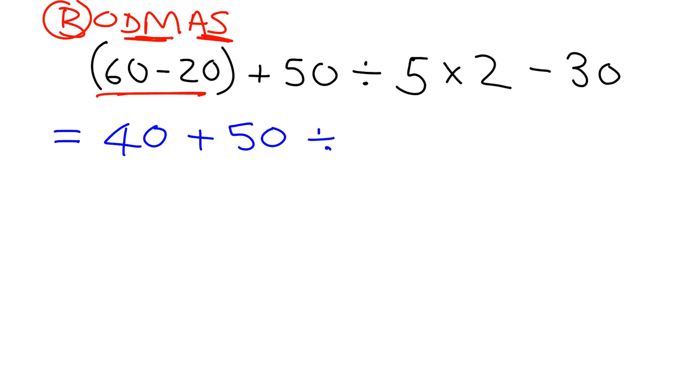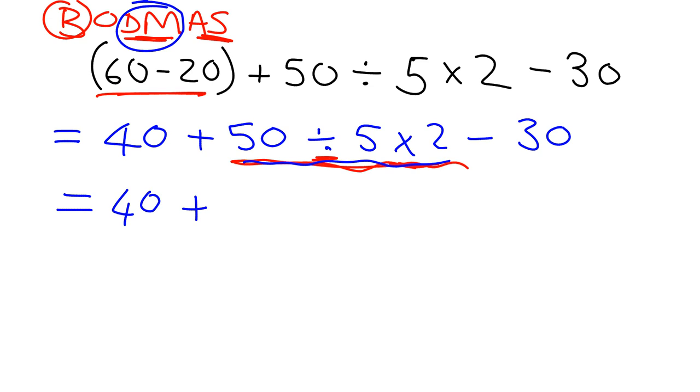Now what does BODMAS tell us is next? It says we've got to deal with division and multiplication next. So I can see here's a division, here's a multiplication, so I'm going to be dealing with this little section here where the division and multiplication is. They're at the same level so I'm just going to work left to right across this area. So 50÷5, that gives me 10, and 10×2 gives me 20, and then I've still got the rest to deal with.